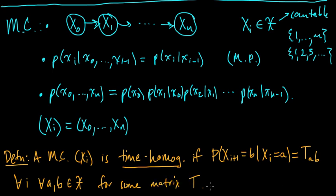Take all these numbers T_{AB} and throw them together into a matrix T. The reason why it's called time homogeneous is because these conditional probabilities — these transition probabilities, as we call them — do not depend on time. They do not depend on i. Usually when we have a Markov chain, we think of i, the index, as time — it's sort of running forward in time.